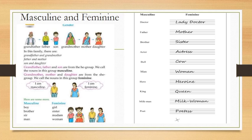The he category is masculine and the she is feminine. Now, the doctor, what is the doctor? What is the mother? What is the brother? What is the sister? What is the actor? The actress? The cow? The man? The woman? The hero? The queen? The milkman? The milk woman? What is the poetess?